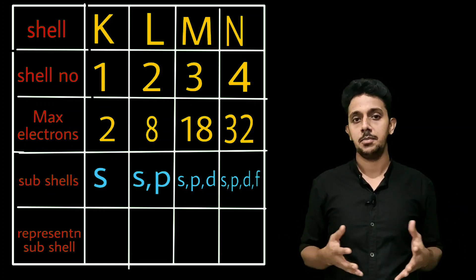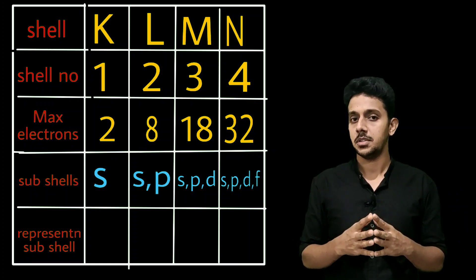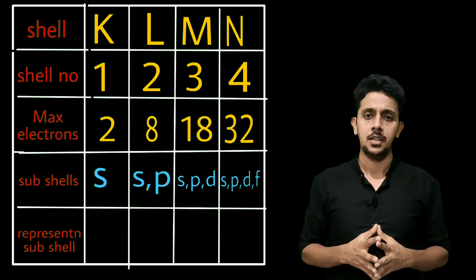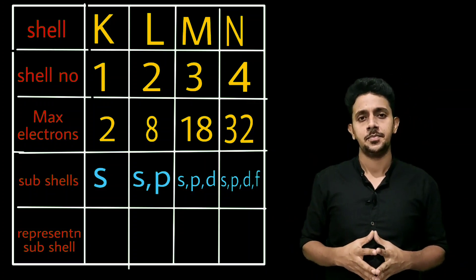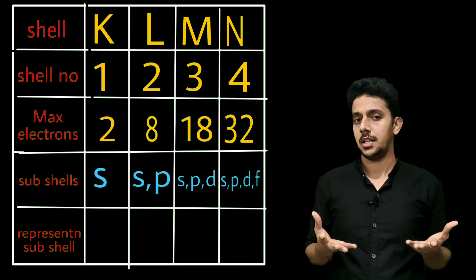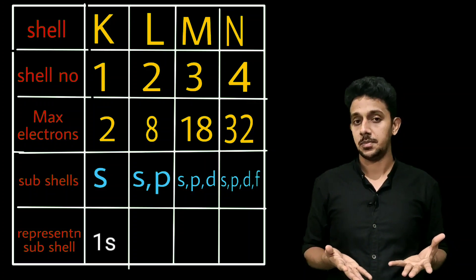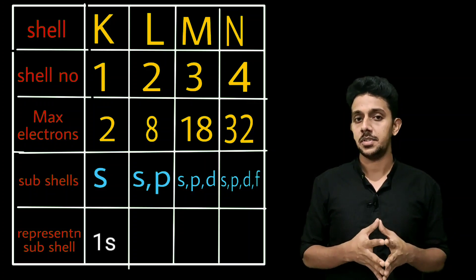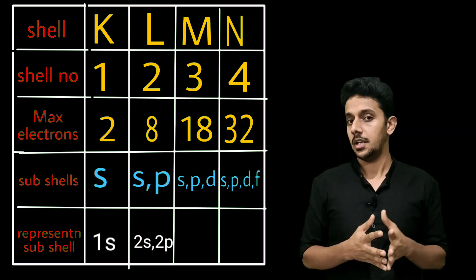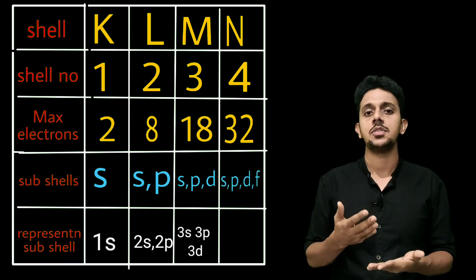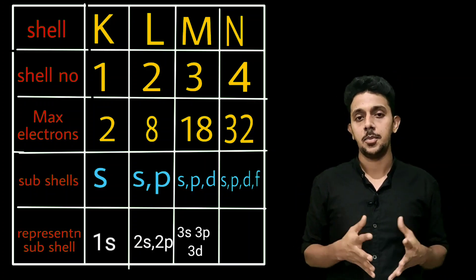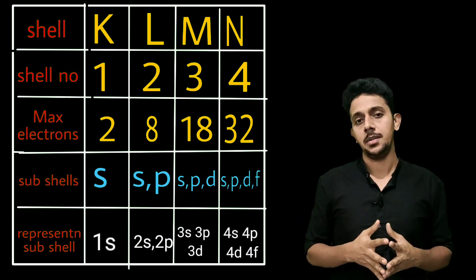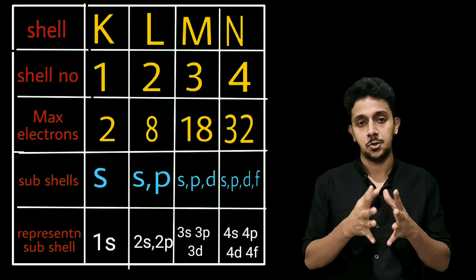Finally, a very important thing: the representation of sub-shells. For the 1st shell, the sub-shell is represented as 1S. For the 2nd shell: 2S and 2P. For the 3rd shell: 3S, 3P, and 3D. For the 4th shell: 4S, 4P, 4D, and 4F. This is the representation — that's very important.